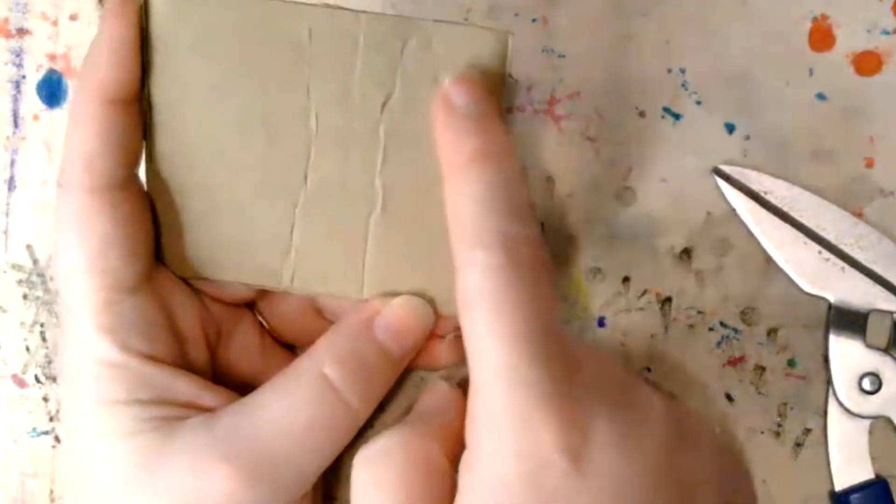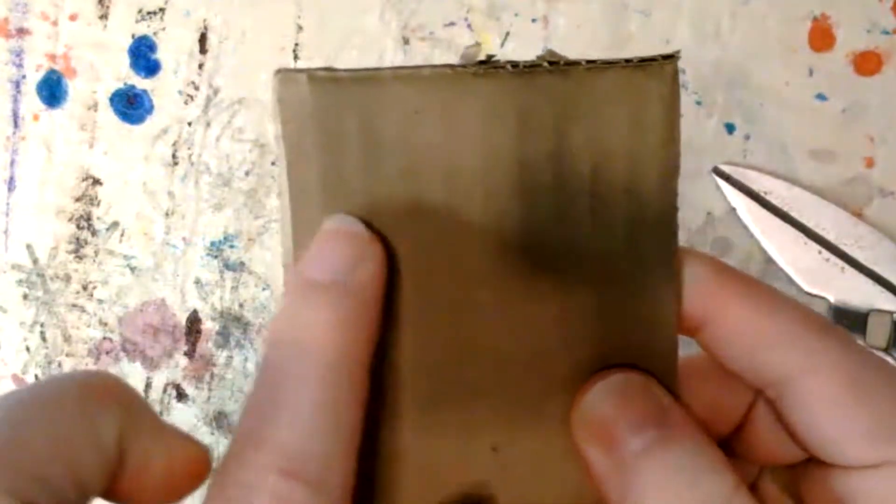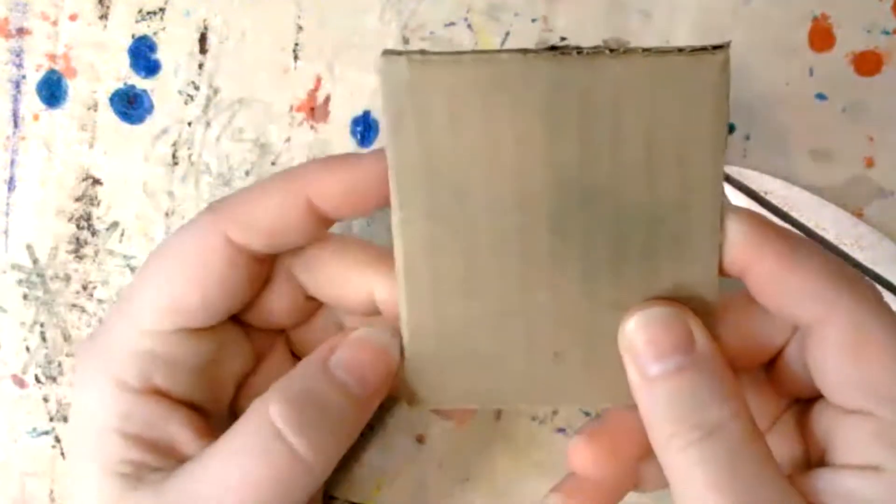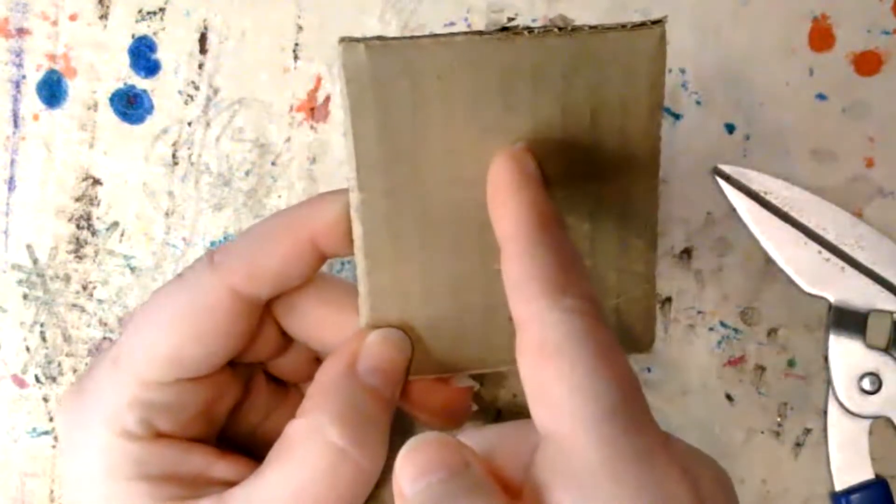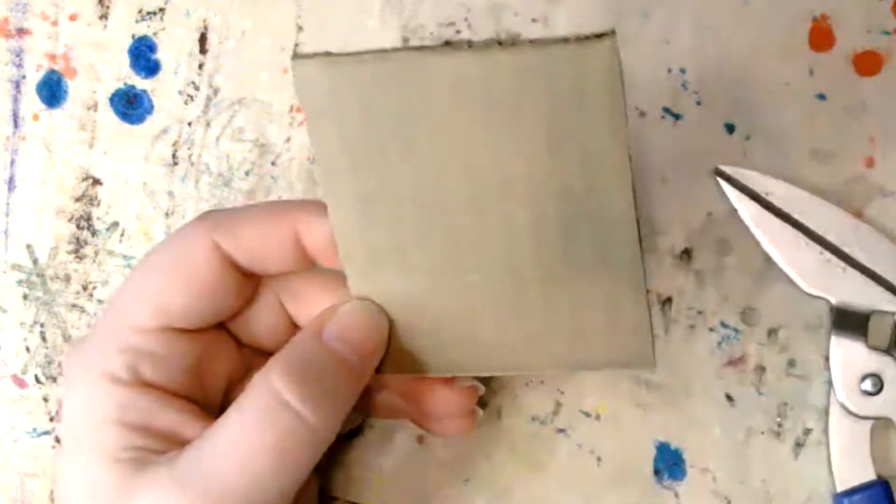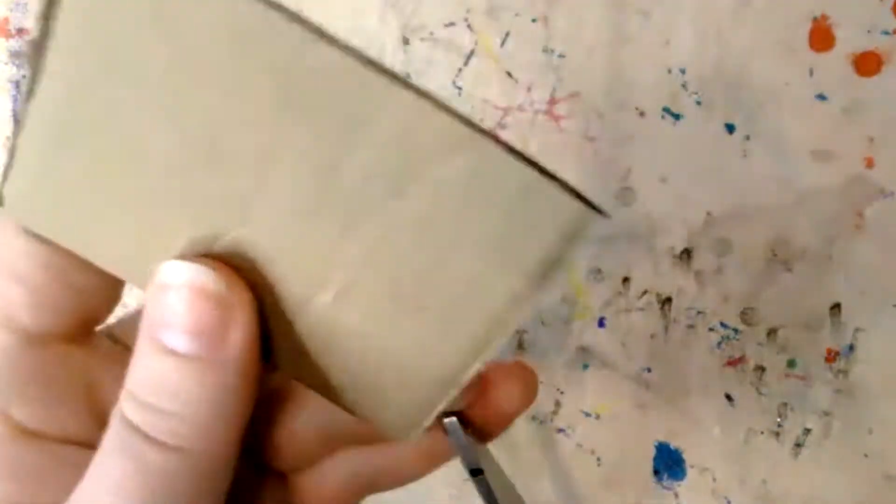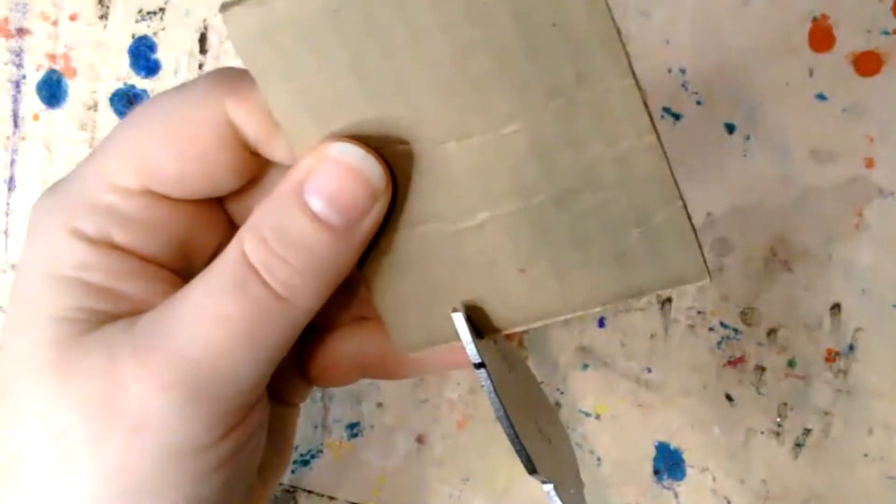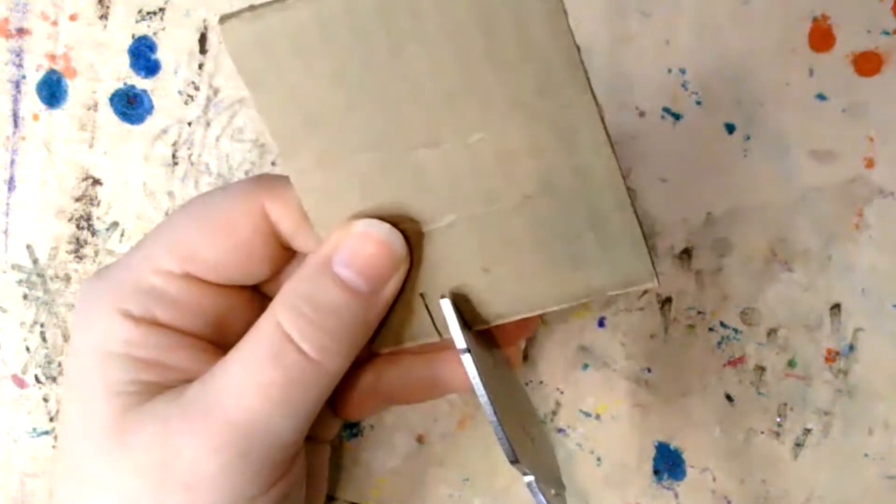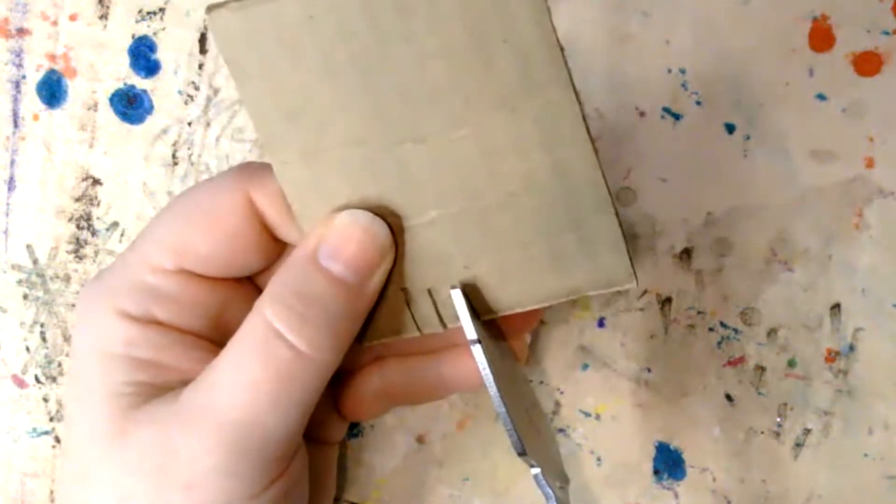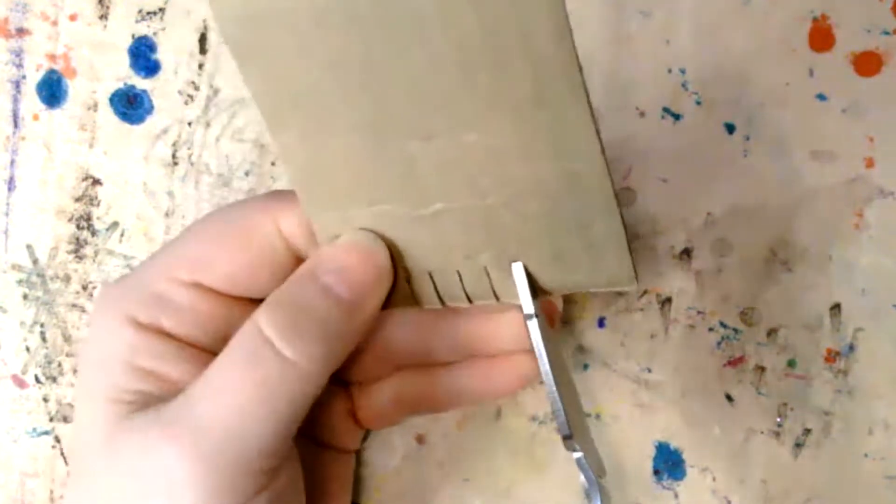You can see on this cardboard in the light where the divisions are between the little corrugations. I'm going to start at one side and go to the other, and try to keep my cutting between the little corrugation marks.